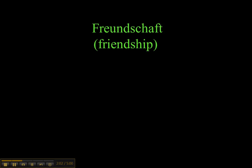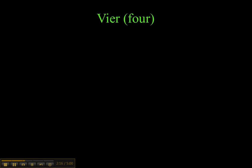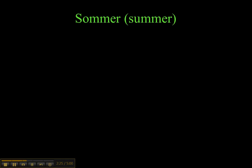Now let's try some examples based on what we've just gone over. 'Freundschaft' — you would guess 'die' because it ends in -schaft, so die Freundschaft. 'Vier', when it's a number, is normally feminine: die Vier. 'Sommer' is a season, so those are masculine: der Sommer, der Winter, der Frühling, der Herbst.